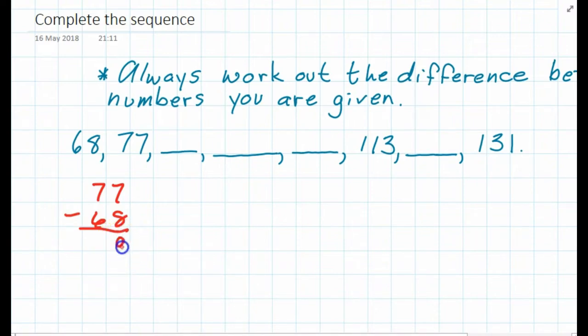That would give you 9, so that means the space between these is 9. That means the gap, the jump from 77 to the next number, has to be 77 plus 9.